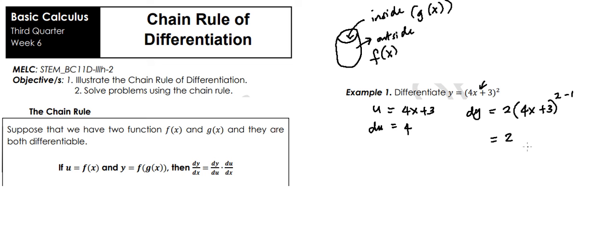Minus 1, so that would become 2 times 4x plus 3. Then multiply each term inside the parenthesis. So we have 2 times 4x that is 8x, 2 times 3 that is 6. So that is your dy.